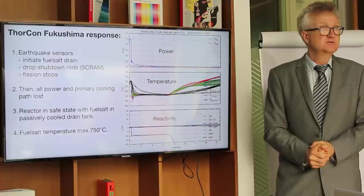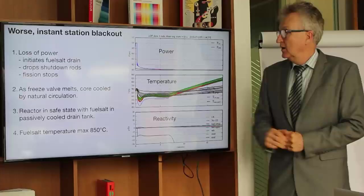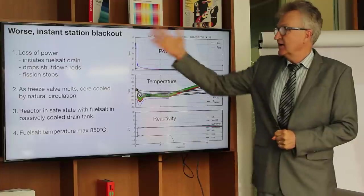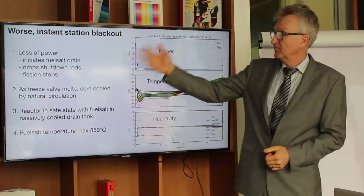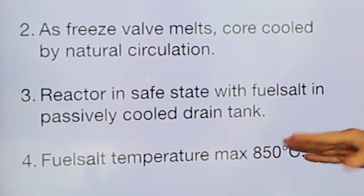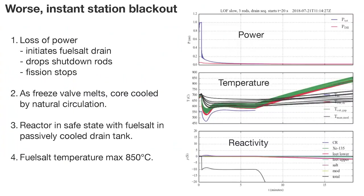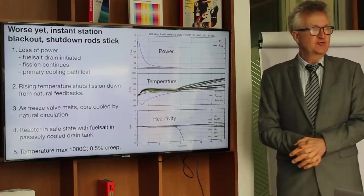We could have a worse accident. Imagine an earthquake so bad it knocked out all of the electricity right away. That's noticeably worse. It's really a big benefit to have that first 45 minutes of cooling. That kind of an accident would take out any light water reactor around. But in our case, we lose the power. There's where the shutdown rods drop. The freeze valve starts to melt. It takes about 10 minutes for the freeze valve to melt. And then fuel salt drains and passively cools because once the drain tanks, the cooling is automatic. In that case, we hit a maximum temperature of 850 C, create a very, very slight amount of creep damage.